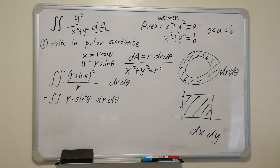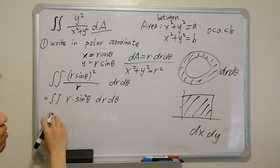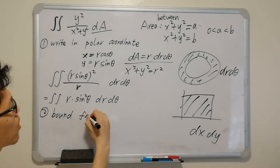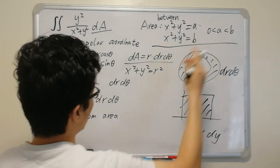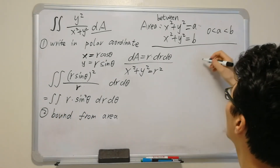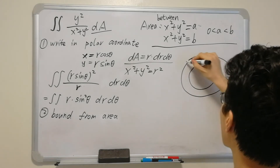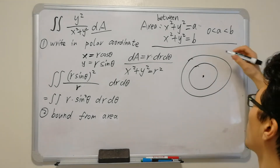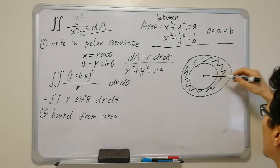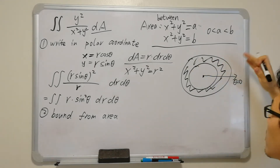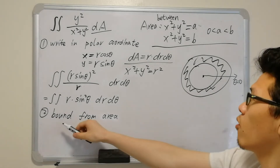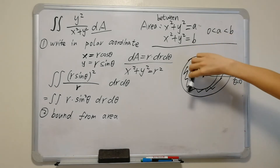Now we determine the bounds. For the angle θ, since the region is a full ring, θ goes from 0 to 2π. So the outer integral has bounds from 0 to 2π. For r, since the ring is between the two circles, the bounds for the inner integral are from a to b.